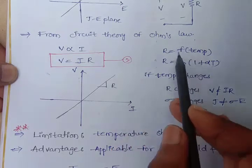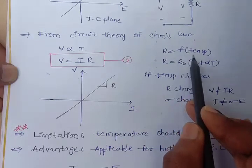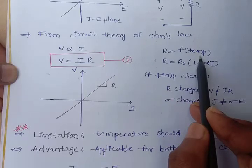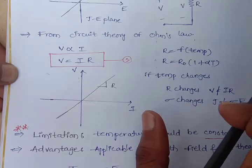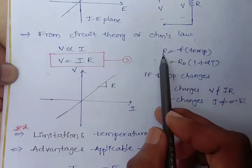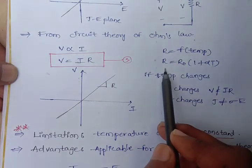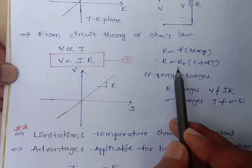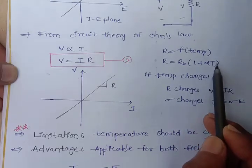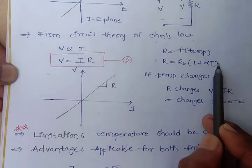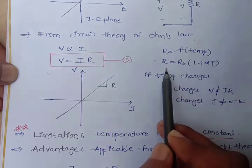Now, resistance R is a function of temperature — as temperature changes, resistance also changes. Looking at the formula: R is equal to R₀ into (1 plus alpha T), which confirms resistance depends on temperature. So if temperature changes, R also changes.